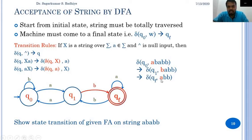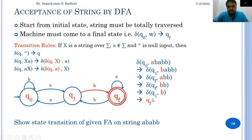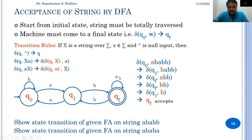In qf, the next input is a, so it again stays in qf and moves the input read one step to the right, pointing to b. In qf, when we get b, the transition is to q1, and in q1 again we get a b that takes the automata back to qf. The automata started in the initial state, traversed the complete string, and finally reached the final state qf. So the string a b a b b is accepted by the deterministic finite automata.